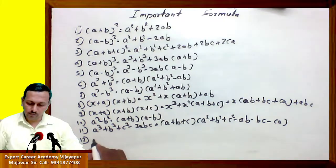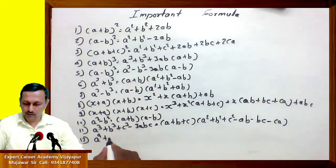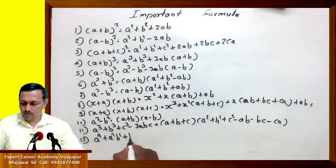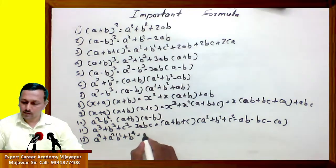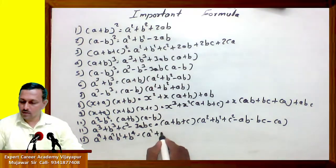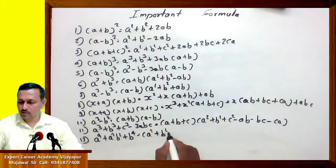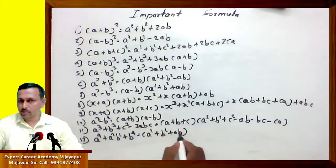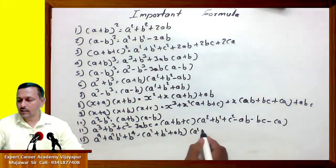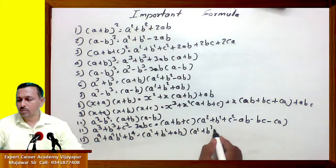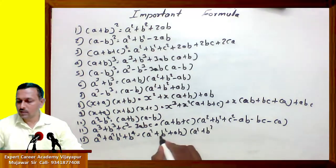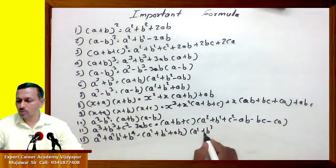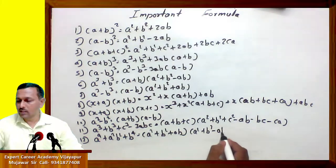Twelfth formula: a raised to 4 minus b raised to 4 equals (a square plus b square plus ab) into (a square plus b square minus ab).